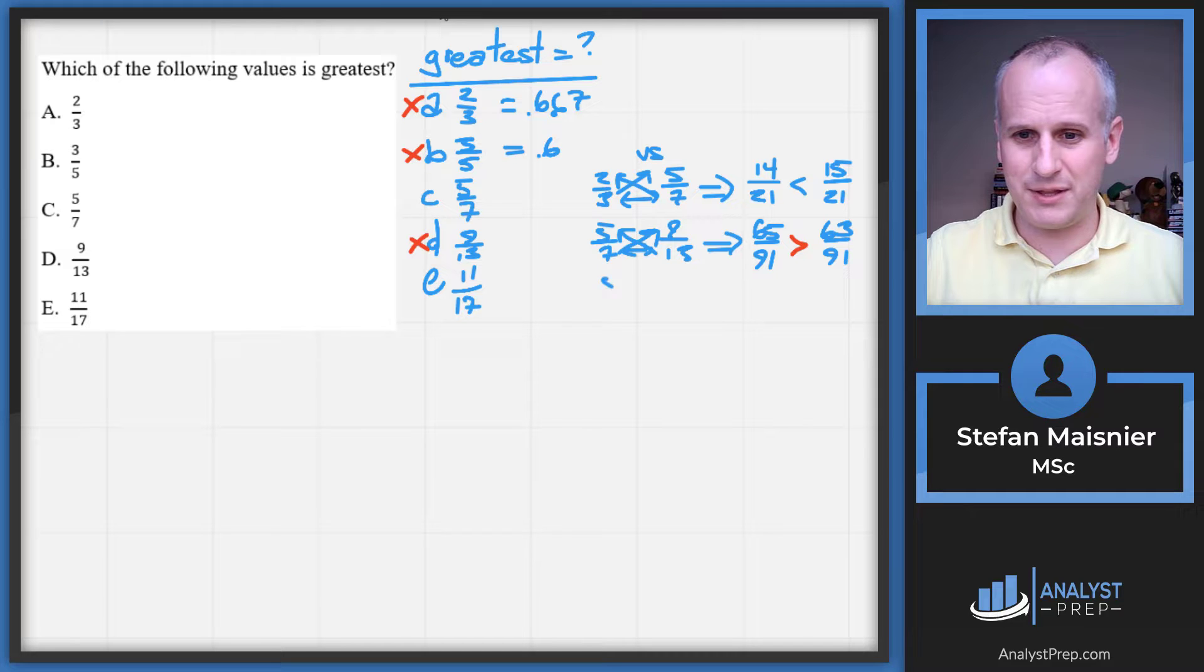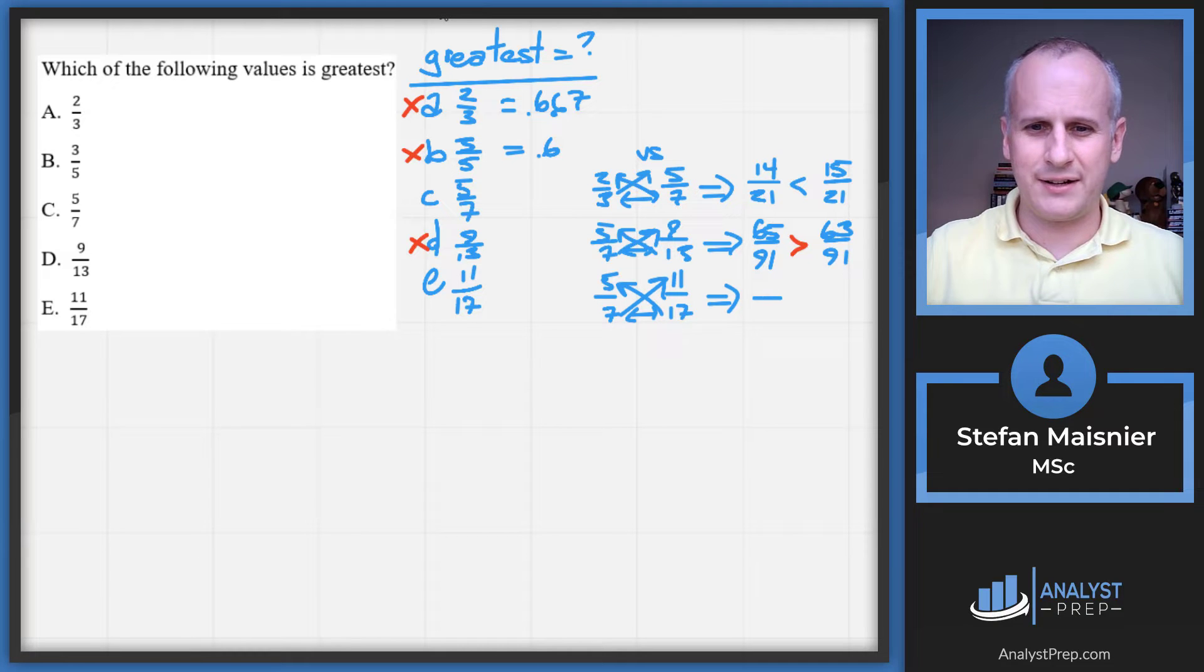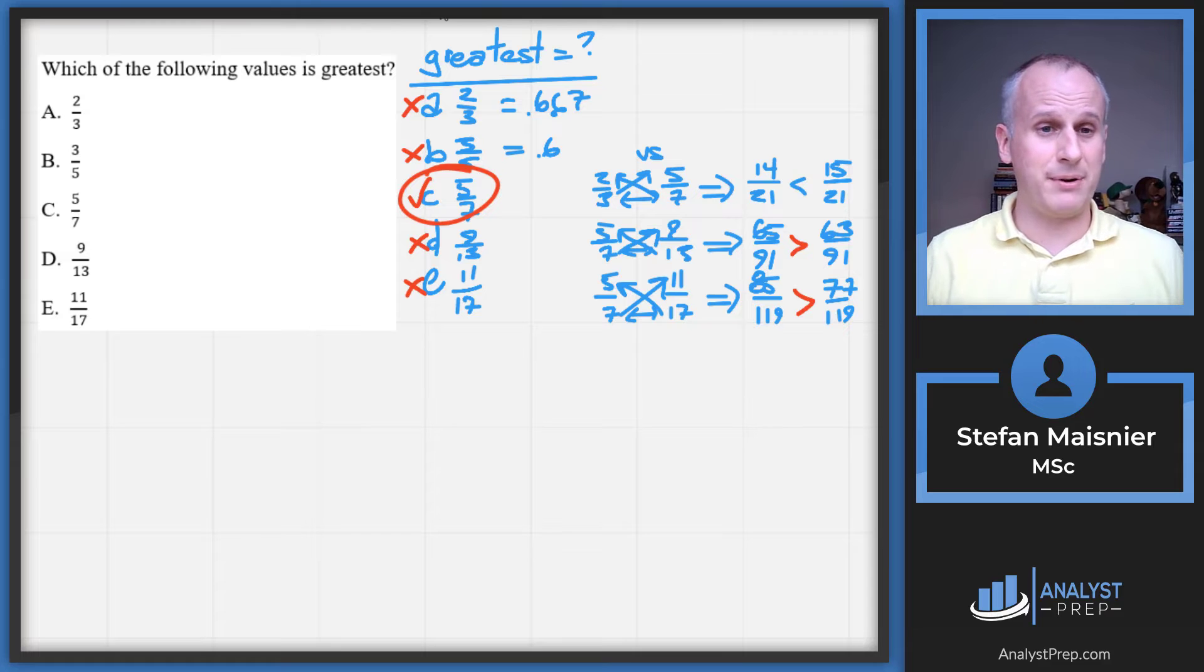The last test is five sevenths versus 11 seventeenths. Set up the bow tie for common denominator: 17 times 7 is 70 plus 49, which is 119. Then 17 times five is 85 and seven times 11 is 77. We can confidently select choice C as the correct answer because everything else through the bow tie comparison method is less than five sevenths.